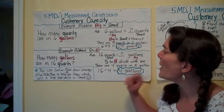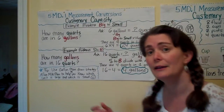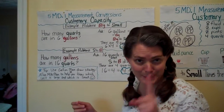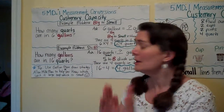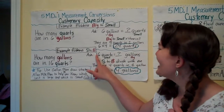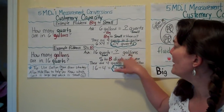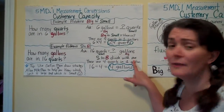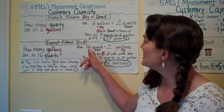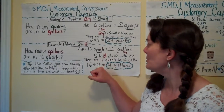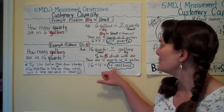For a small-to-big example: how many gallons are in 16 quarts? Ask yourself — what do I know? I have 16 quarts. What do I need to find? How many gallons. We're going from small to big, so S to B — divide with me. There are 4 quarts in one gallon; that's the conversion factor. My known is 16, my conversion is 4, my operation is divide. 16 divided by 4 gives you 4 gallons.